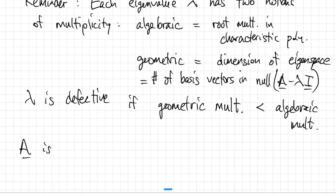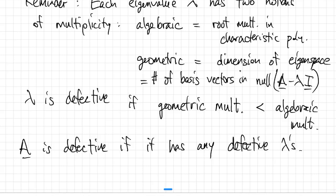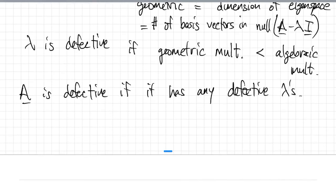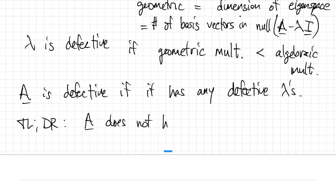Finally, the matrix A is defective if it has any defective eigenvalues. The executive summary about a defective matrix is that there aren't enough eigenvectors, in the n by n case, to really fill out all n dimensions.